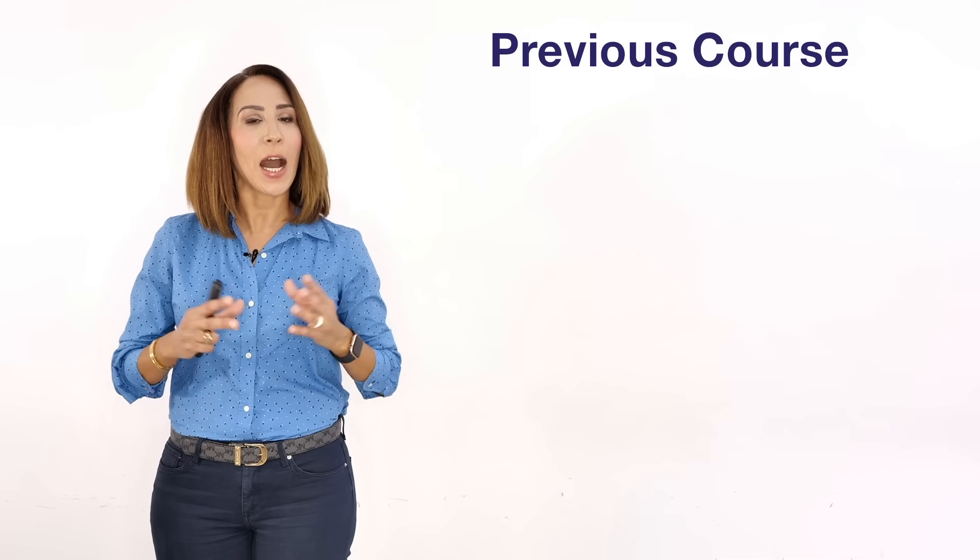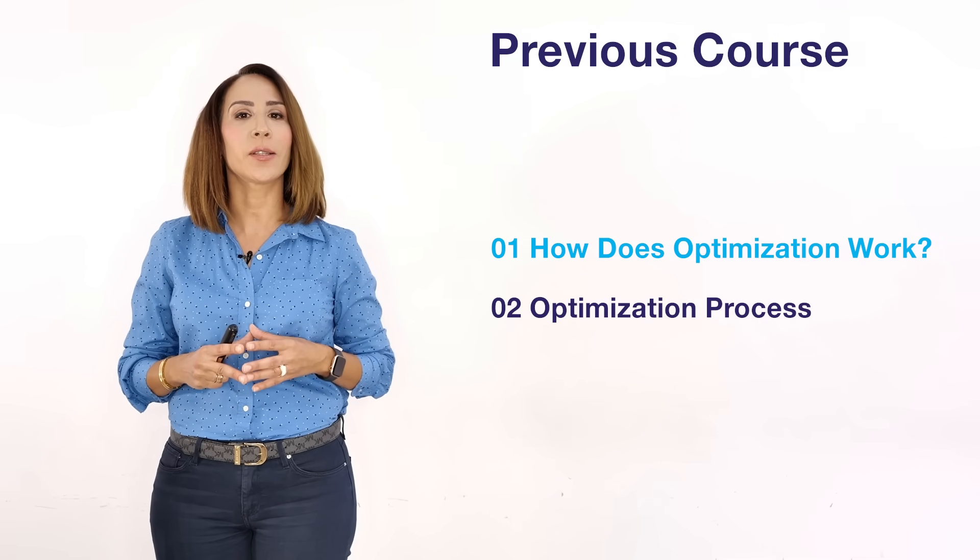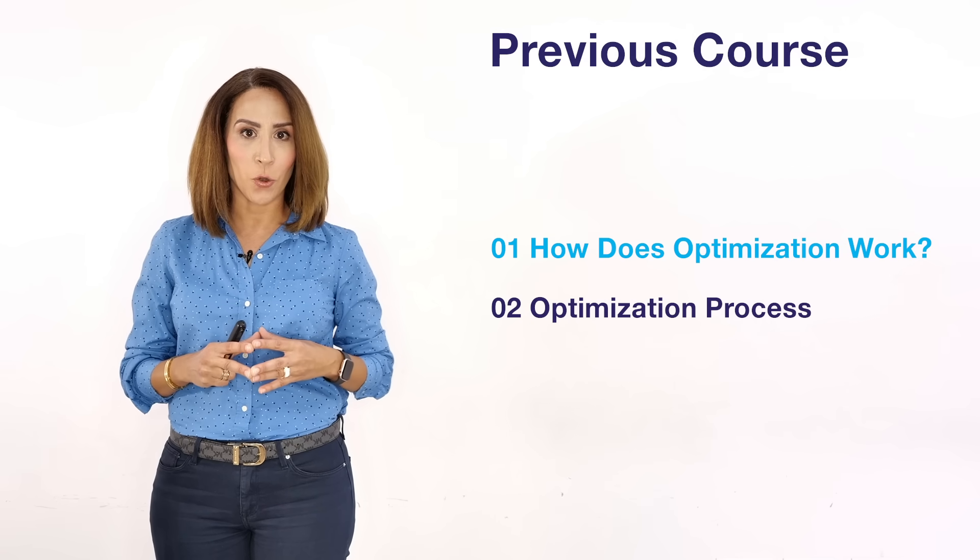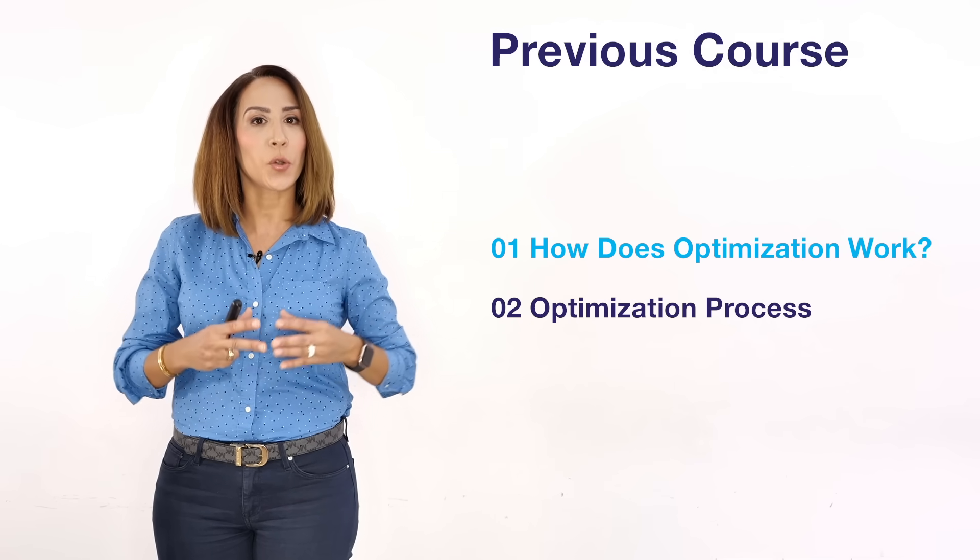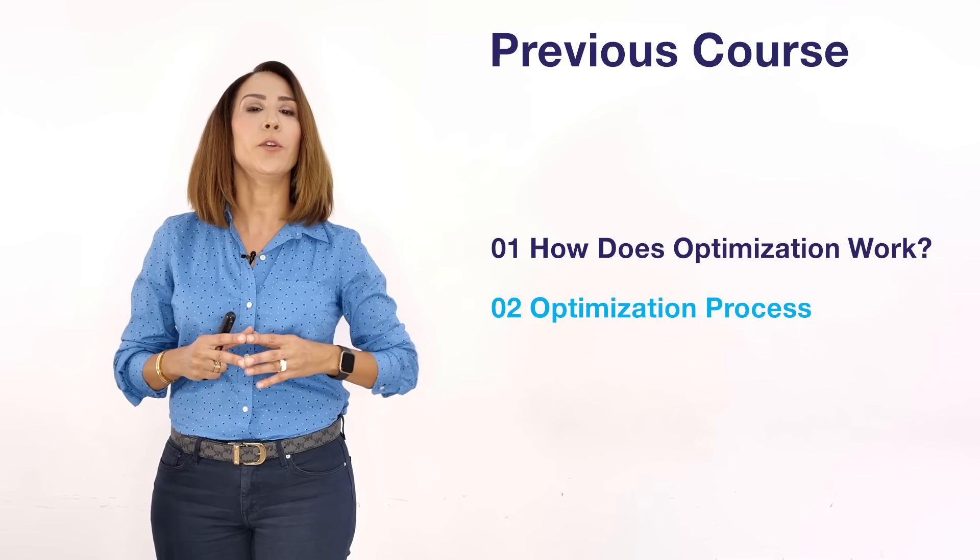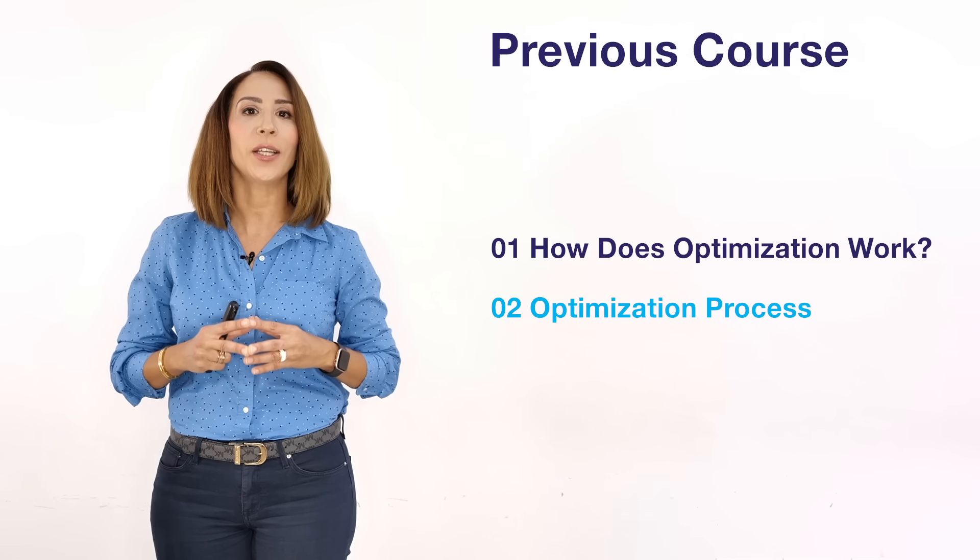In the previous course we have seen how optimization works and we looked at the importance of considering the diminishing return curves when it comes to allocating your budget. We also prescribed a specific process that we advise you to go through in order to make sure that the results of your optimizations are sound and robust.